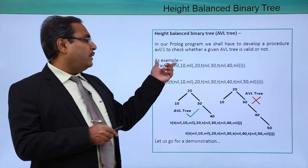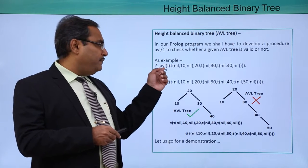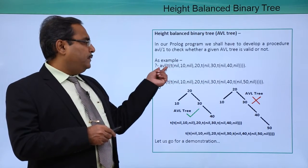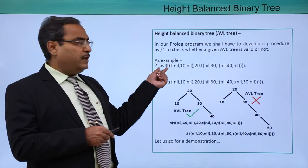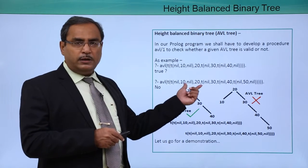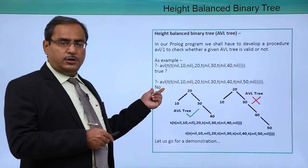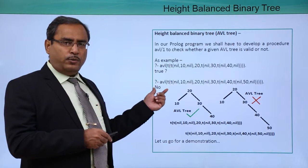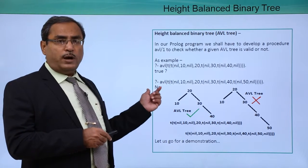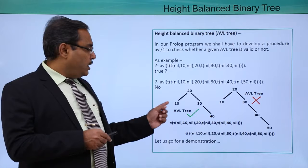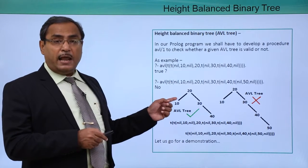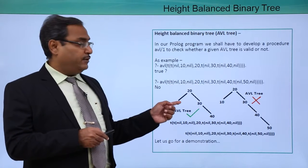For example, if a valid tree is given as input to the predicate avl, then the output will be true. But if an invalid tree is given, then the output will be no. So why is one true and the other not? If you consider the first one, this is a highly balanced AVL tree.